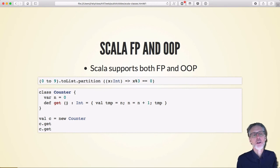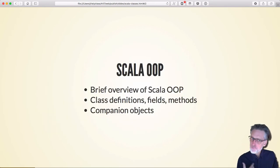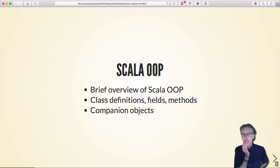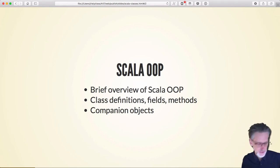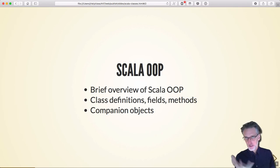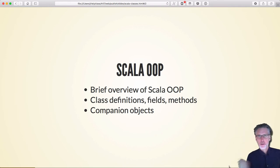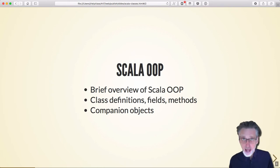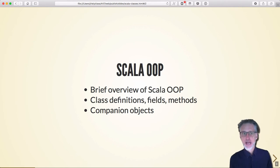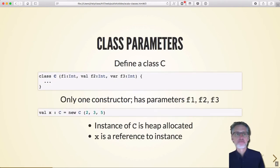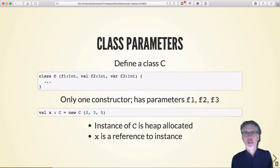We're going to talk about object-oriented programming in Scala: how to define classes, fields, methods, and the role of companion objects. There are two different kinds of objects in Scala — those created as instances of a class, and objects declared one-off as top-level singleton objects. Let's start with classes since they're more familiar.